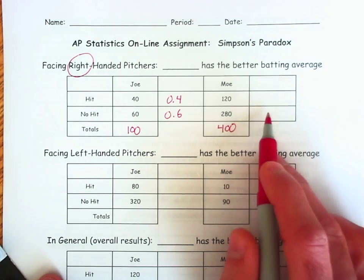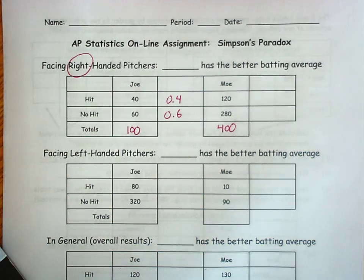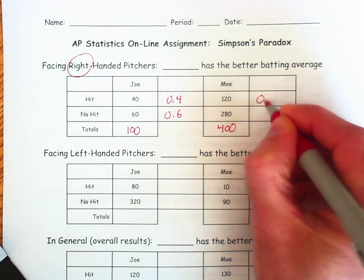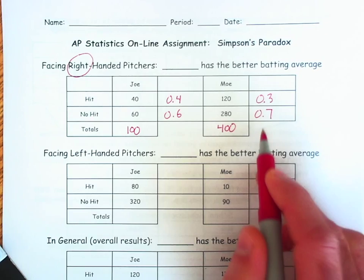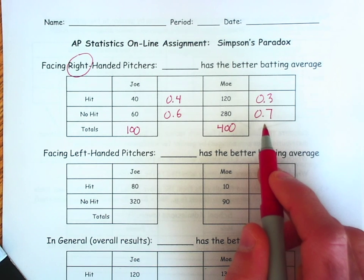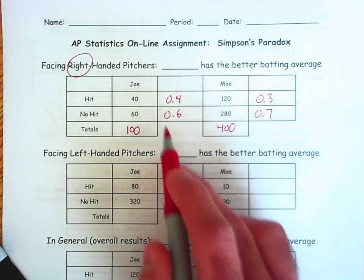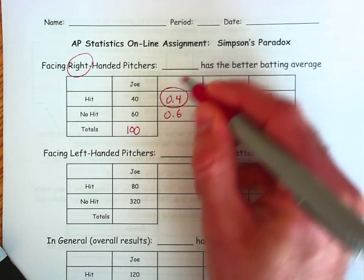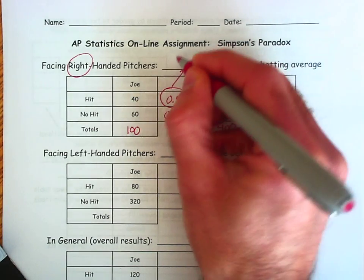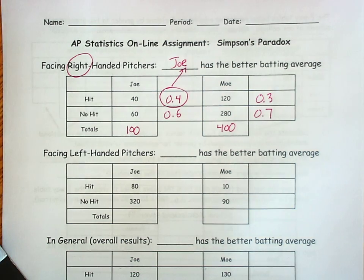Mo's batting average: 120 out of 400, that is 0.3. So 0.7 is the percent of the time that he misses. His batting average is 30%. So in this case, Joe has the better batting average against right-handed pitchers. That's all I wanted you to see from the first table.